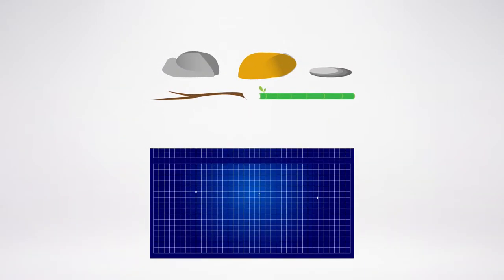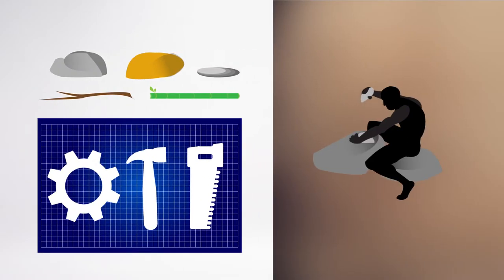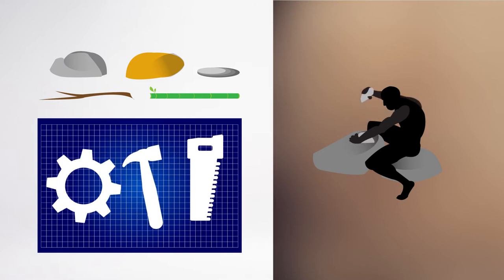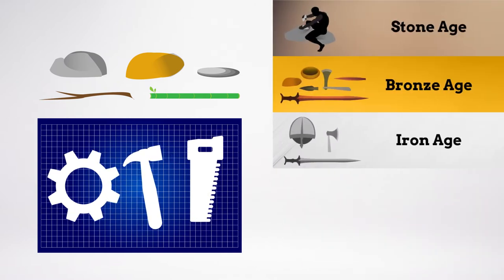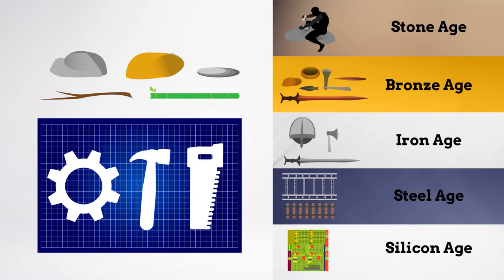The relationship between materials and engineering is as old as the first stone tools created by our ancestors. The closeness of this relationship is reflected in how periods throughout human history are defined: the Stone Age, the Bronze Age, the Iron Age, the Steel Age, and the Silicon Age.